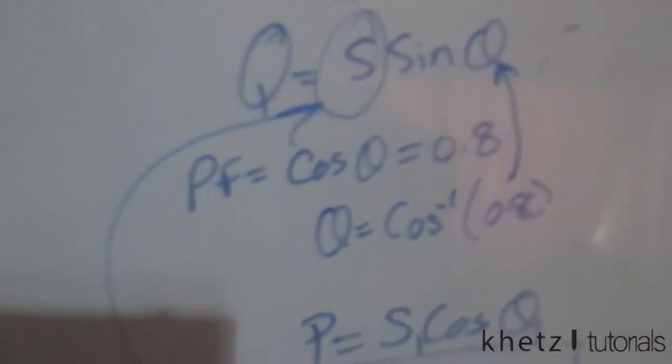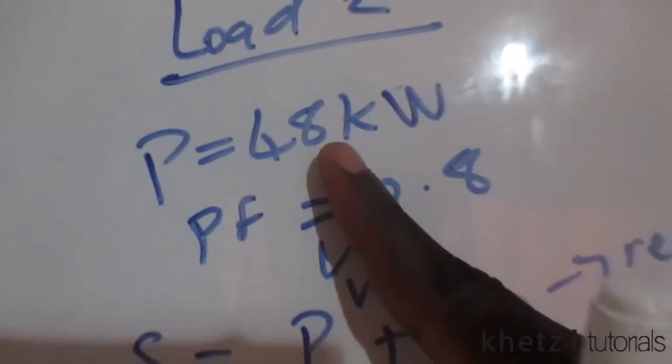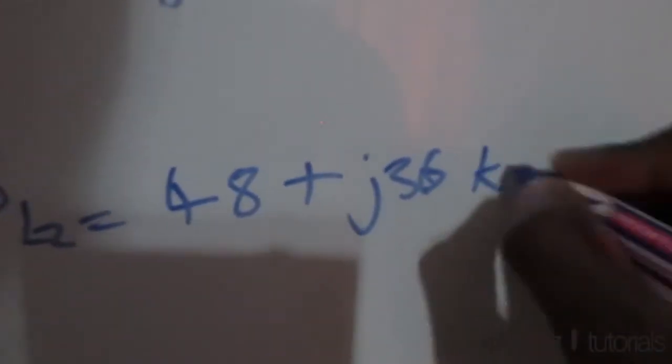This gives an apparent power of 60 kVA. The reactive power Q equals 60k multiplied by sine of arccos(0.8), which gives 36 kVAR. With both components known, the complex power for load two is 48 plus j36 kilovolt amperes.